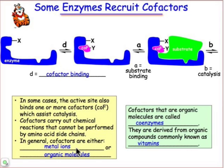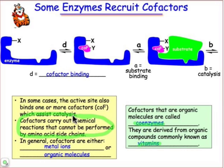Cofactors are essentially metal ions, or they could be organic molecules. Cofactors that are organic molecules are known as coenzymes, and the precursors of those coenzymes are really the vitamins that you ingested this morning if you had a bowl of cornflakes. The key point of these cofactors is that they're able to do chemistry that isn't available through the amino acid side chains, and so it's a way for enzymes to recruit chemistry that's not accessible through the natural 20 amino acids.